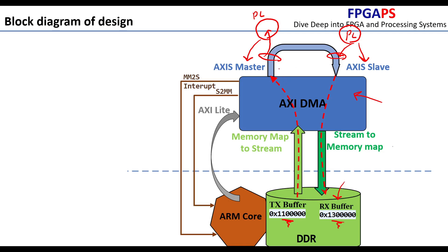In loopback mode, whatever we send to the AXI Stream Master will be sent back to the AXI Stream Slave. So at the end of the test, whatever was in the TX buffer after one complete write and read must also be written into the Rx buffer. The main job of the AXI DMA engine is to offload the heavy duty of data transfer between the DDR memory and the PL from the ARM core.